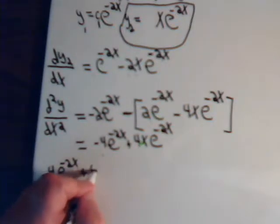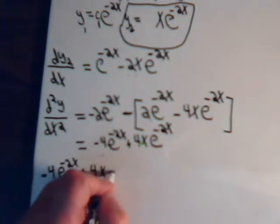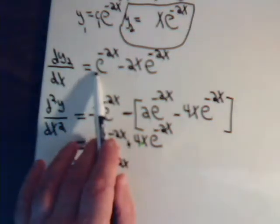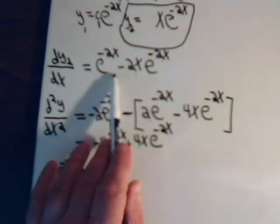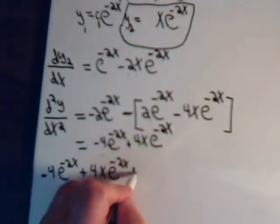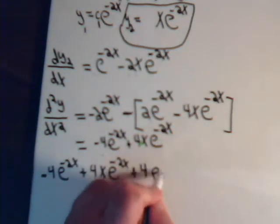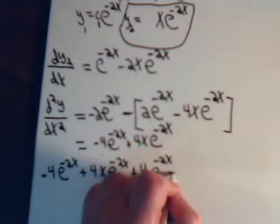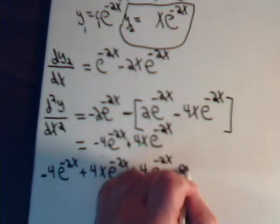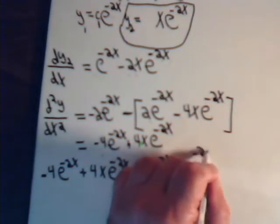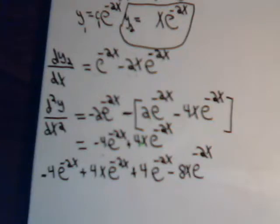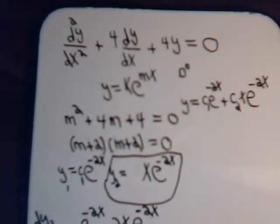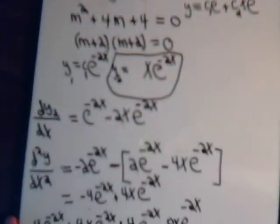Then we have to have plus 4 times this, so we have plus 4 e to the minus 2x, minus 8x e to the minus 2x.